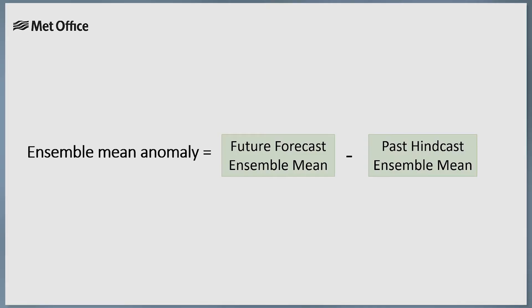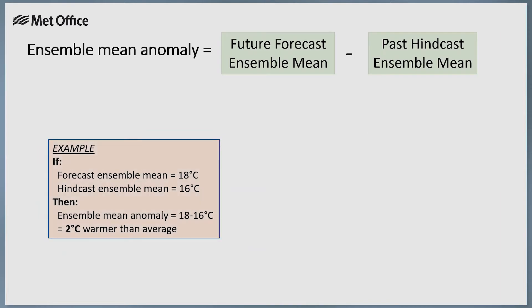So how do we process and display all this information? One common method is to take the average, or the mean, of the forecast ensemble members for a particular climate variable such as temperature. This ensemble mean gives us a simple central estimate for the forecast. The difference between particular conditions and long-term climatology is known as an anomaly. What we're interested in is the difference between the forecast ensemble mean and the model's own long-term climatology as calculated from the hindcasts — known as an ensemble mean anomaly — which can be calculated at each grid point within a model to produce a map.